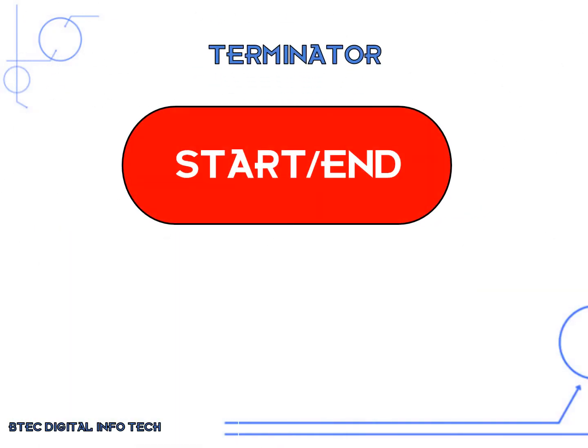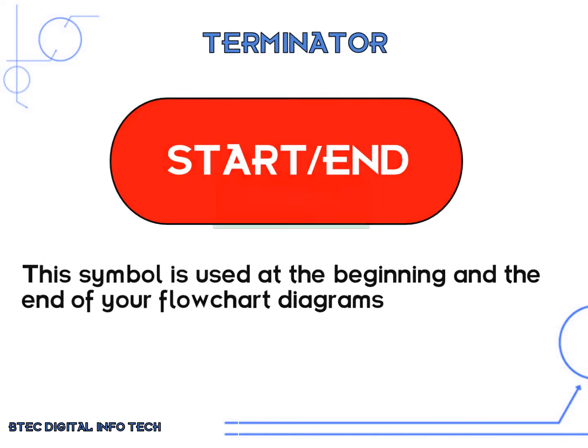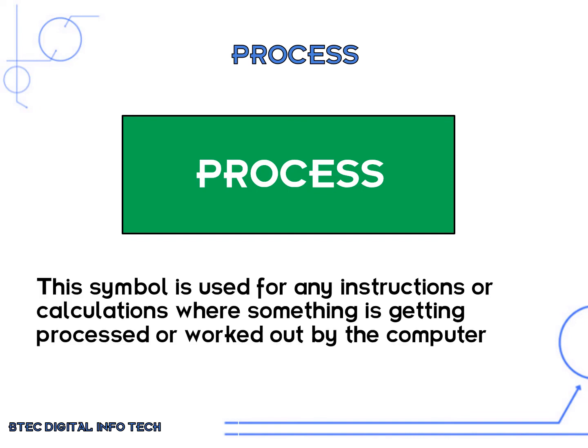The first symbol we need to look at is called the terminator symbol. It is used to start and end a flowchart. The process symbol is used to show any process that takes place — any instructions or calculations where something is getting processed or worked out by a computer system.